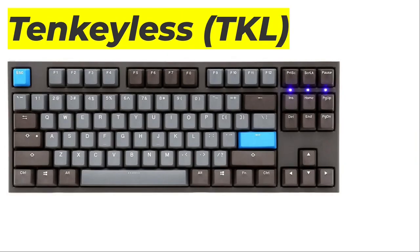This is called a 10 keyless keyboard. You still have the number row up here, but you now have a lot of space on the right side for your mouse if you are a right-hander. But the navigation cluster and the arrow keys still take up a lot of space on the right.